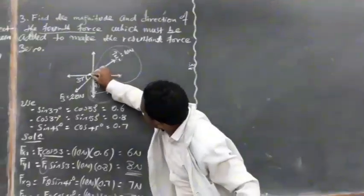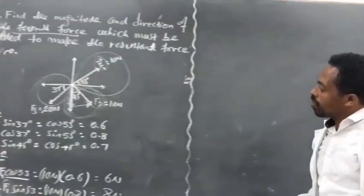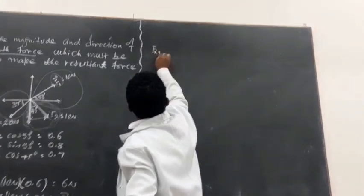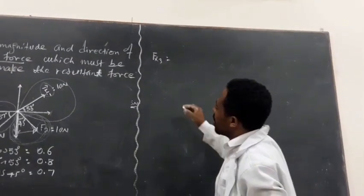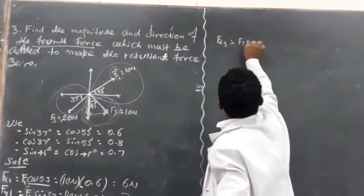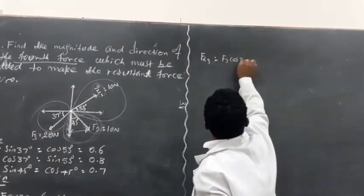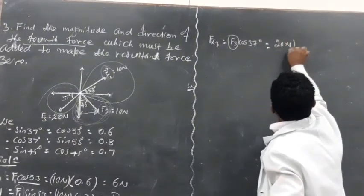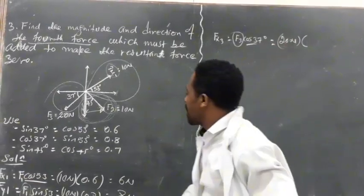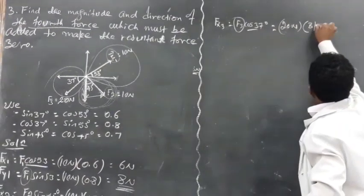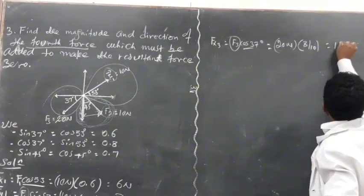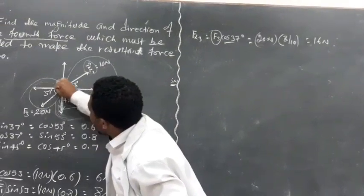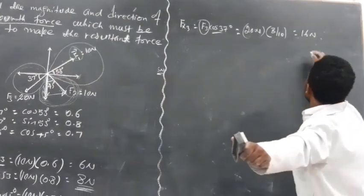The same method for the third force. F3x equals F3 times cosine 37 degrees. F3 is 20 newtons, and cosine 37 is 0.8, so it becomes 16 newtons. But it lies along the negative x-axis, so it is negative.